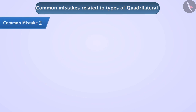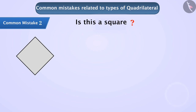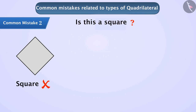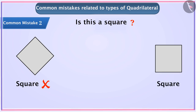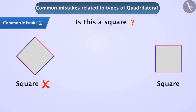Common Mistake 2. Now look at this figure — is this a square? Most students do not consider this as a square. They think that the sides of a square must be parallel to the paper or edges of the screen. Here the sides of the given quadrilateral are not parallel to the screen, so they consider that this is not a square. Remember that identifying a quadrilateral just by seeing it is a wrong method.